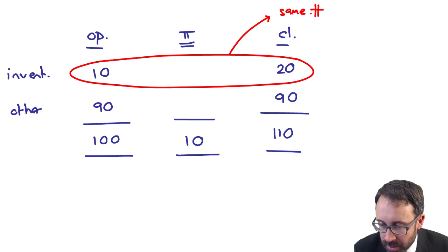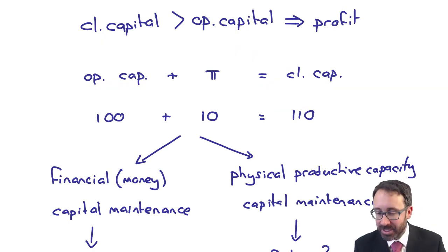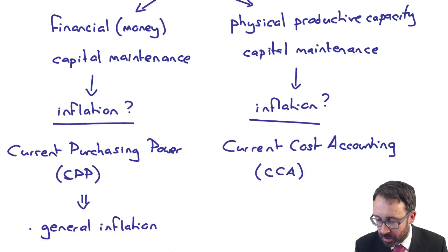Can we purchase the same number of units as what we could previously, as at the start of the year? If we can't, we need to make an inflation readjustment to go through there and reflect the number of units that we can actually physically produce or, if you like, physically go through and operate with within the business.